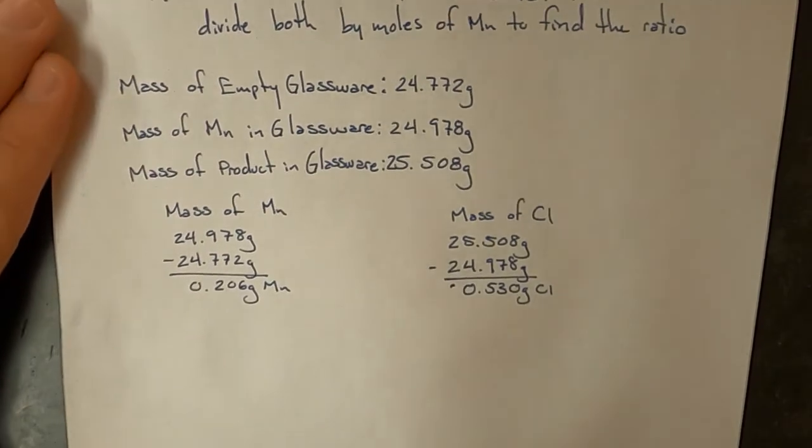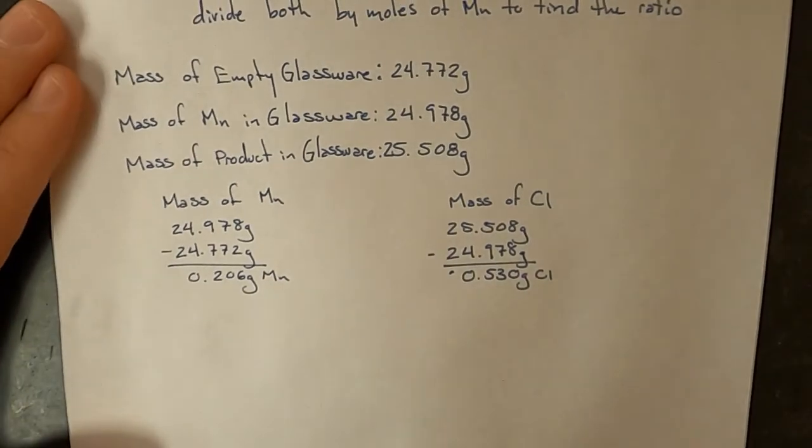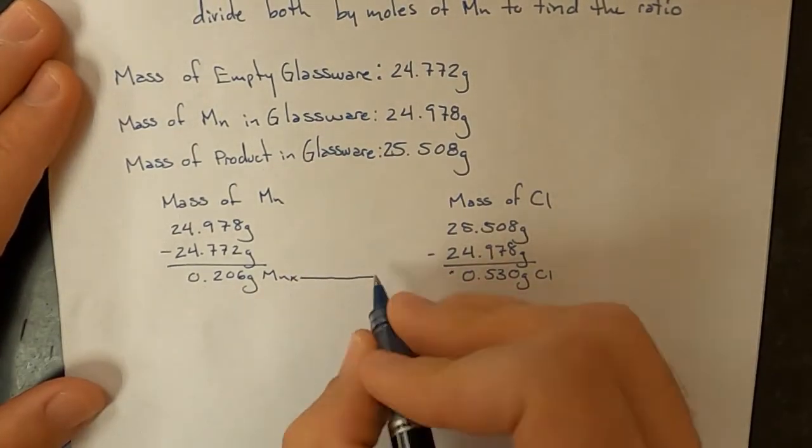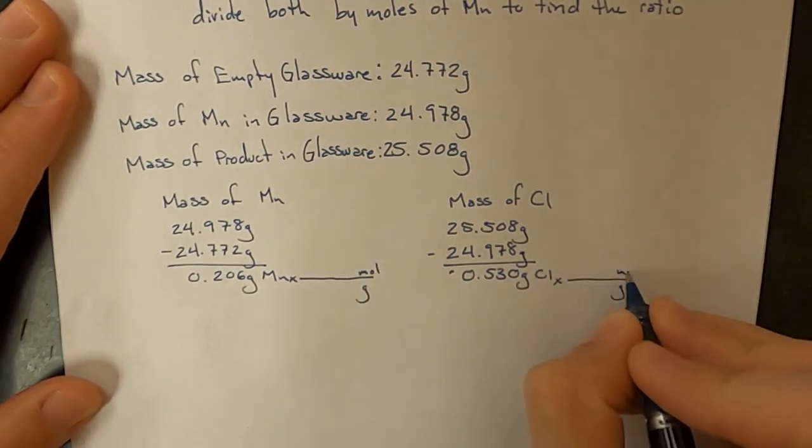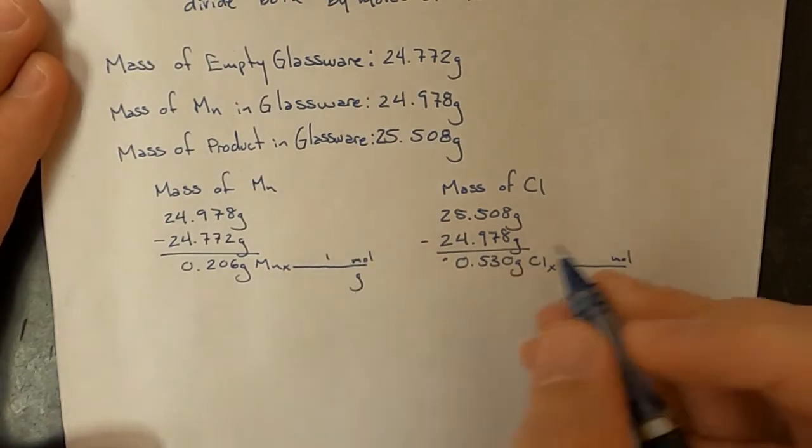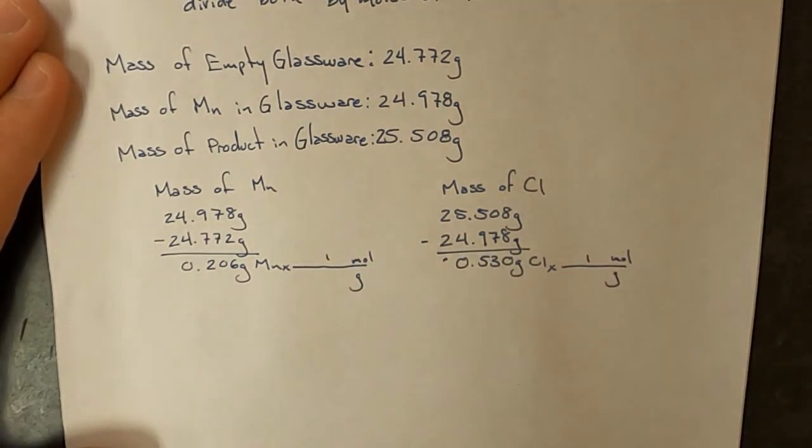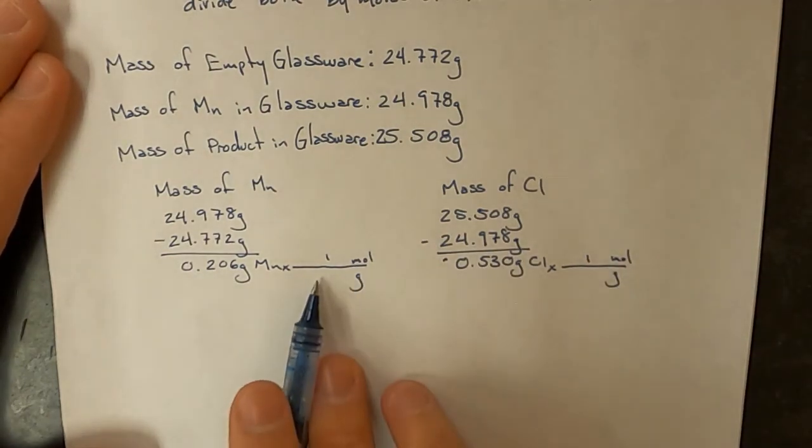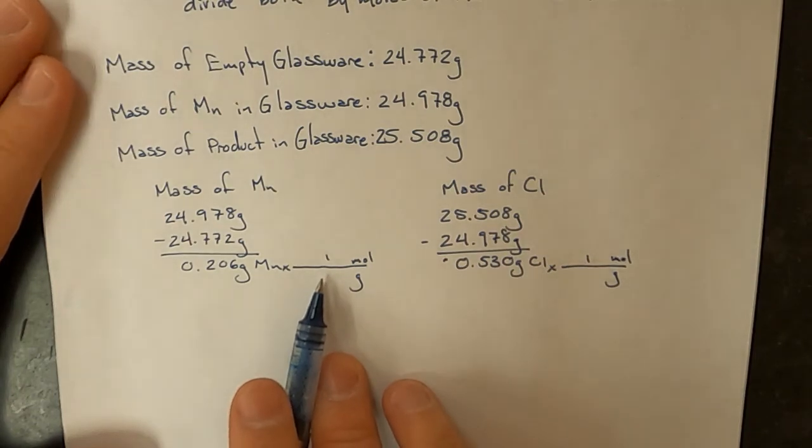Now that we've got masses of both of these elements that were in our substance, we're going to convert them to moles. To convert grams to moles, it's one mole on the top of the conversion fraction, and on the bottom will be the molar mass of each element.